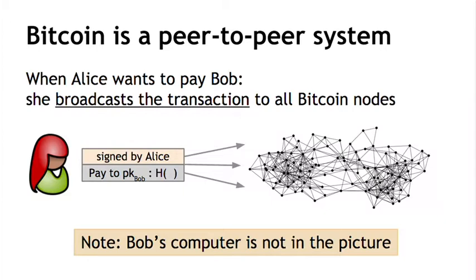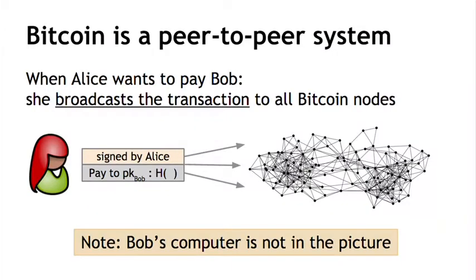Notice that Bob's computer is nowhere in this picture. If Bob wants to be notified that the transaction happened and he got paid, he might run a Bitcoin node to listen on the network. But his listening is not necessary for him to receive the funds — the Bitcoins will be his whether or not he's running a node. So what is it exactly that the nodes want to reach consensus on? Given that various users are broadcasting transactions, everybody wants to reach consensus on which transactions were broadcast and the order in which they happened.